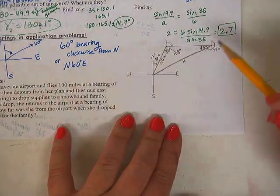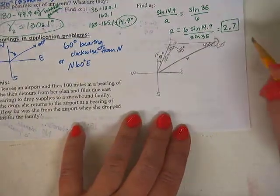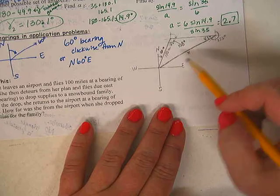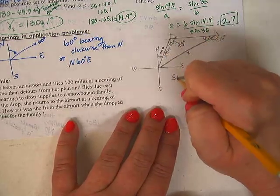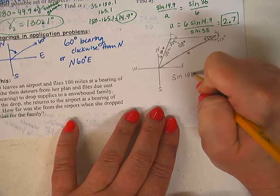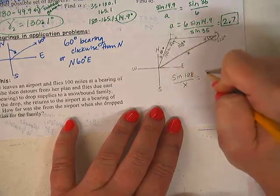See how the hard part is taking the bearings and figuring out how much the angles are within the triangle. Once you know what the angles are in the triangle and you make sure you have your pieces across from each other like you need them, it's really easy.